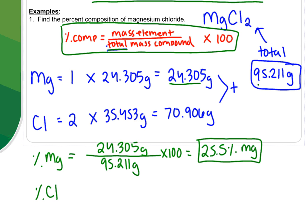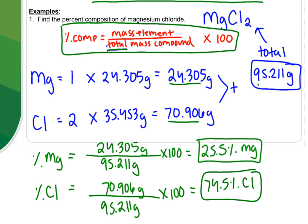This means, out of that compound, 25.5% of it is magnesium. So the rest must be chlorine. Well, let's prove it. The mass of the chlorine in the compound was 70.906 grams. Notice, I used the total mass. I didn't use 35.453 grams. That's just of one atom. But because I have two, I'm using the 70.906 grams. Divided by the total mass of the compound, which is 95.211 grams, times 100 gives me 74.5% chlorine. And these numbers, to double check and make sure you're correct, they should add up to 100%. If they don't, you've made a mistake.